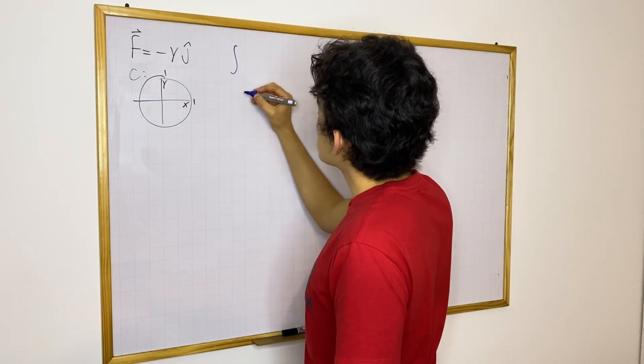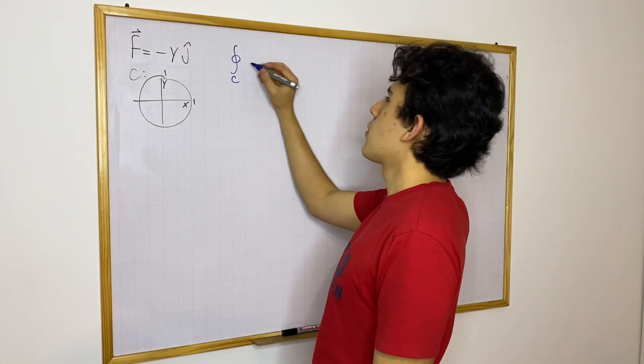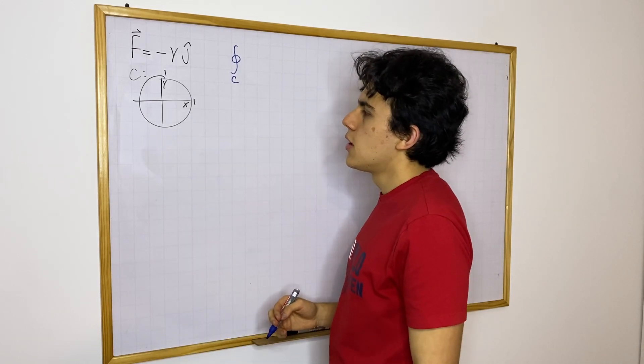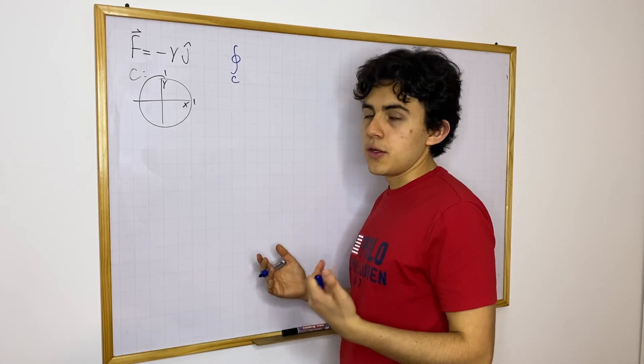Yeah, so we know that along the unit circle we're going to have a line integral. We're going to put the circle through it just to tell us that this is a closed curve. Now there are many things you can do with closed curves.